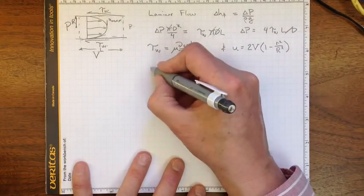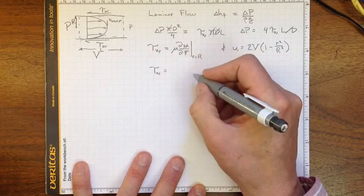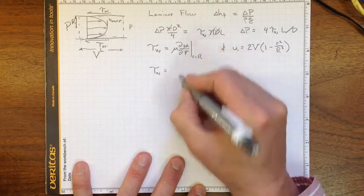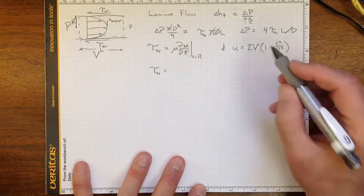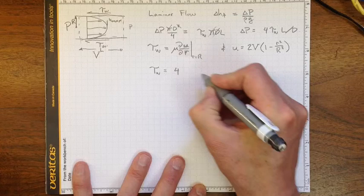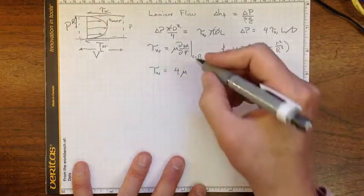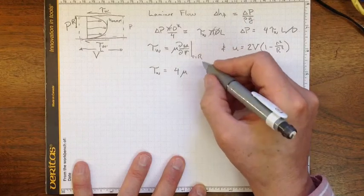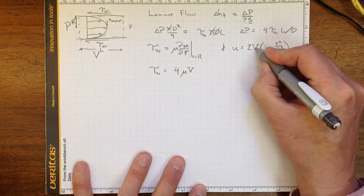So if we put those two together, we'll wind up with tau wall, the wall shear stress, equal to, there's going to be two there and two there makes four, times mu, times v, that v comes from there, so we've got the two, times,